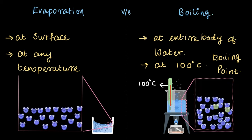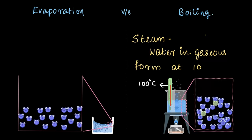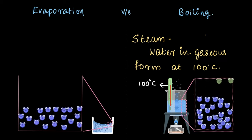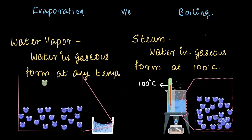An important distinction to make here is the difference between water vapor and steam. Steam is typically a technical term for water in gaseous form at 100°C — when water gets converted due to intense heating, that is due to boiling. Water vapor, on the other hand, refers to water in its gaseous form at any temperature. So water vapor is generated by evaporation and steam is generated by boiling; though technically both are gaseous forms of water.